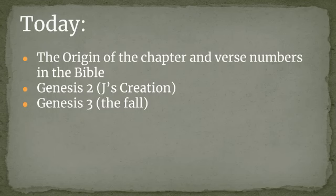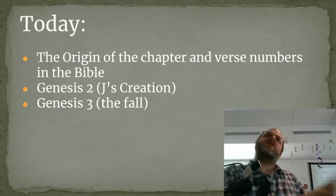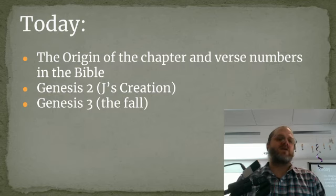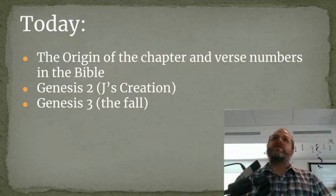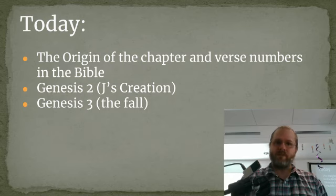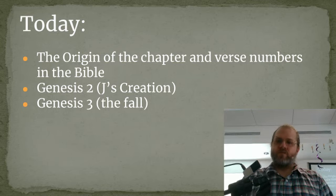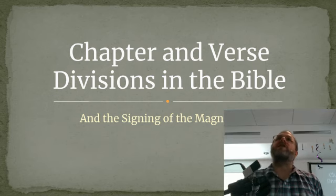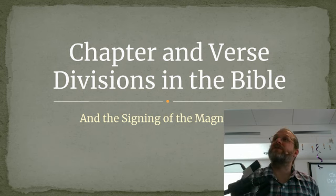Today, I want to talk about the origin of the chapter and verse numbers. We're going to have one thing of general interest, and then we'll dive into a specific text — in this case, J's creation and J's account of the fall. The general topic will be the origin of the verse numbers, and the signing of the Magna Carta. I know those sound like they're not terribly connected, but I promise they are.